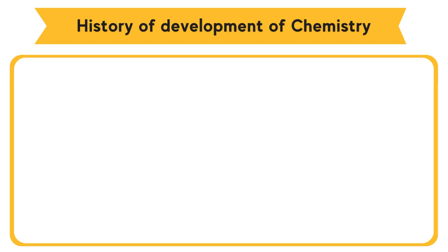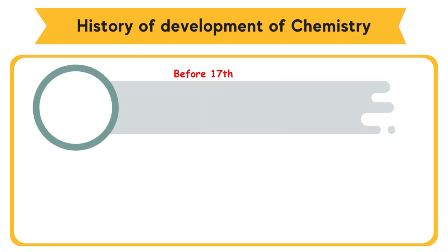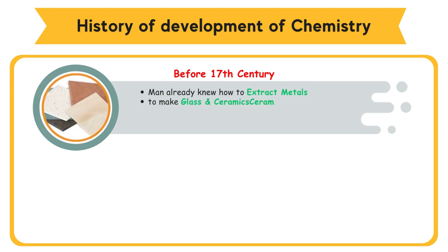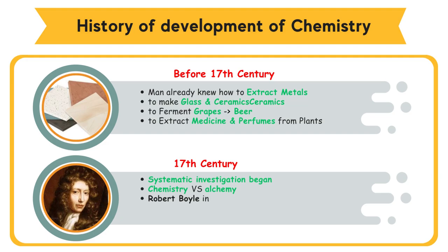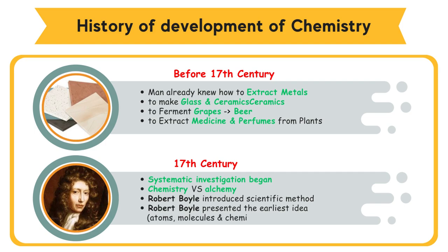History of development of chemistry. Before the 17th century, man already knew how to extract metals, make glass and ceramics, ferment grapes into beer, and extract medicine and perfumes from plants. In the 17th century, systematic investigation began and differentiated chemistry from alchemy. Robert Boyle introduced the scientific method and presented the earliest ideas about atoms, molecules, and chemical reactions.